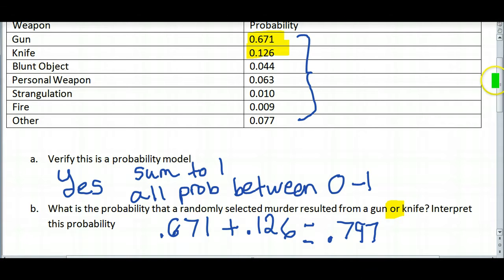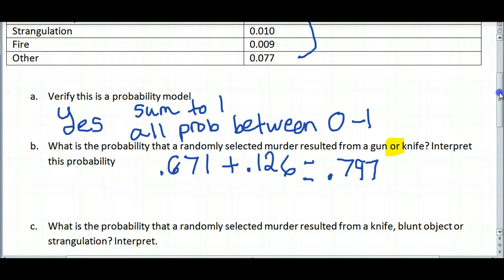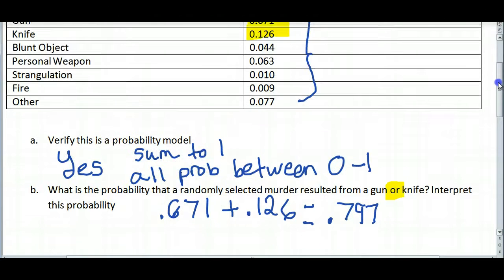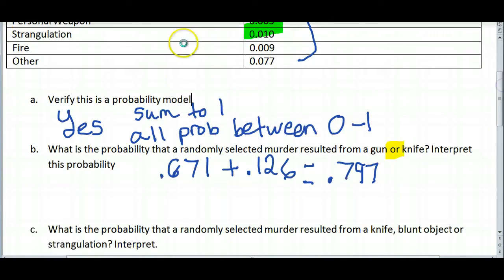The next question asks, what is the probability that a randomly selected murder results from a knife, blunt object, or strangulation? So now we're going to look at knife, blunt object, or strangulation. So I want to go ahead and add those probabilities together.